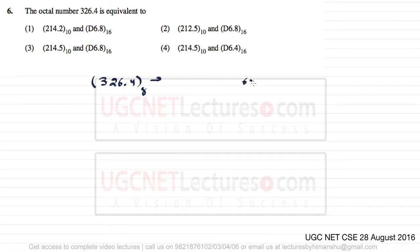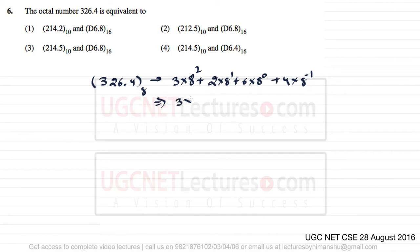6 into 8 raised to power 0, plus 2 into 8 raised to power 1, plus 3 into 8 raised to power 2, plus 4 into 8 raised to power minus 1. This gives us 3 into 64, plus 2 into 8 which is 16, plus 6 into 1 which is 6, plus 4 divided by 8 which is 0.5.